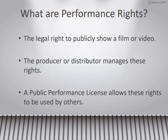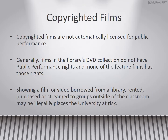I'm Jody Tennyson, and I will be talking about performance rights and when you need to obtain permission to show videos or films. Performance rights are the legal rights to show a film or video in public. These rights are managed by the distributor or publisher, and by obtaining a public performance license, it allows others to use them. Copyrighted films are not automatically licensed for public performance. Generally, films in the library's DVD collection do not have public performance rights. Showing a film or video to groups outside the classroom — whether borrowed from a library, rented, purchased, or streamed — may be illegal and could place the university at risk for possible lawsuits.